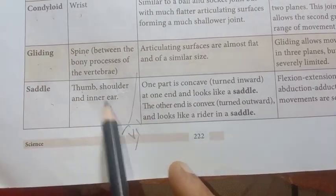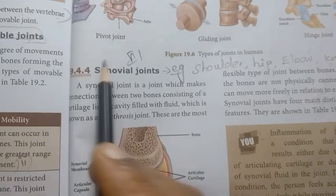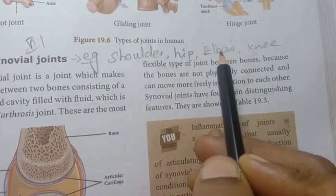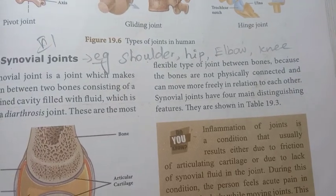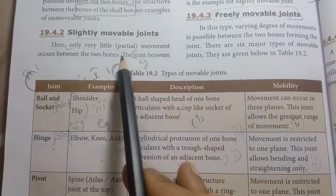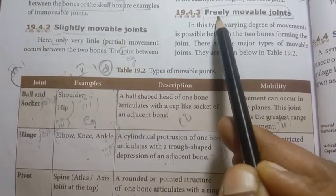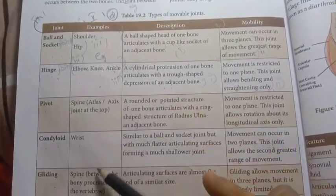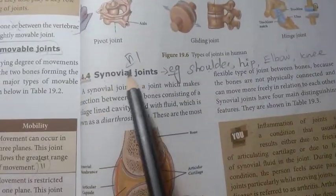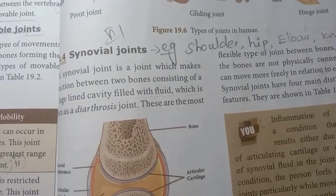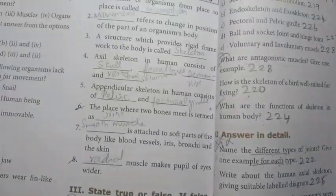Shoulder and inner ear are also noted as examples. Synovial joint examples include shoulder, hip, elbow, and knee. In total: fixed or immovable joint, slightly movable joint, freely movable joint with six sub-types, and synovial joint — each with one example. That completes the answer to question one.